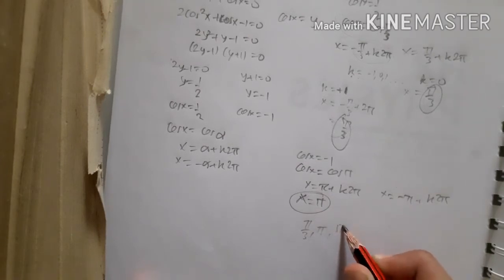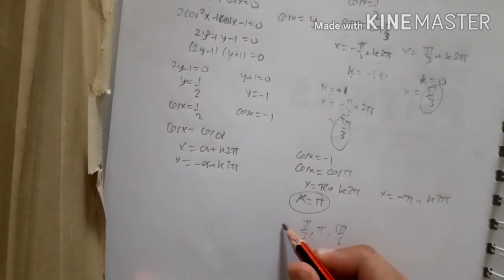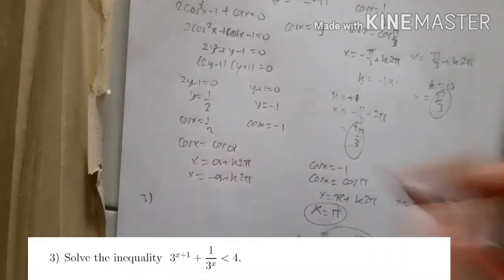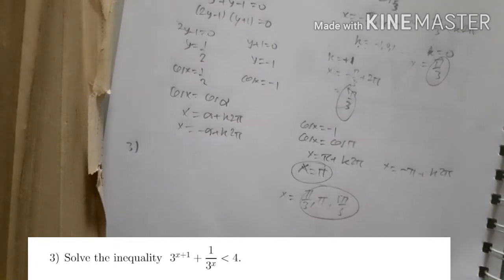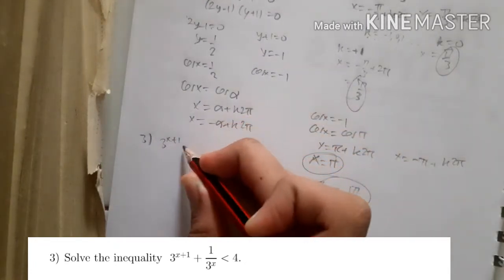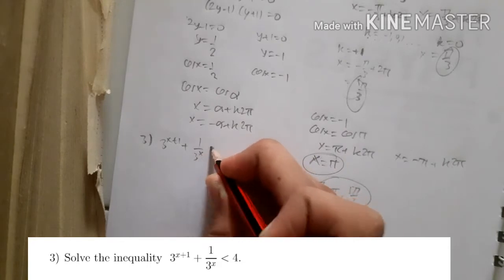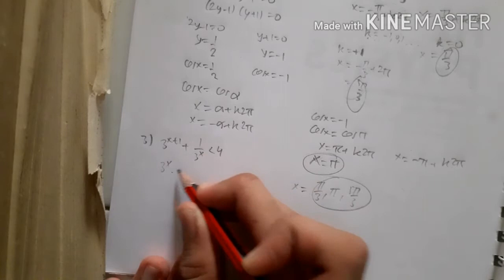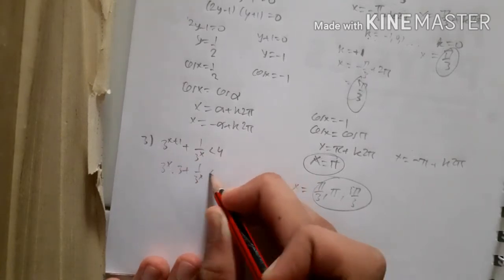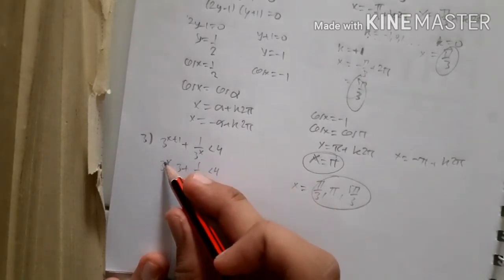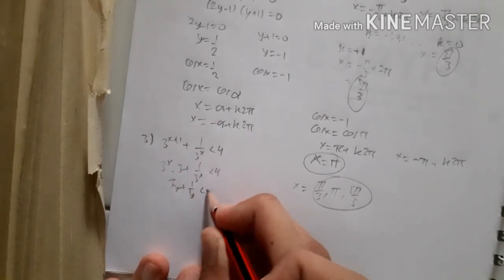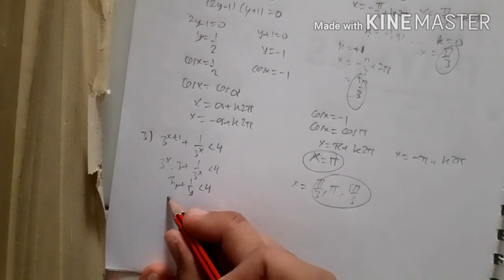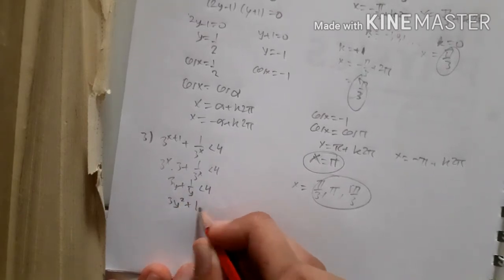Combining all solutions from problem 2: x = π/3, π, and 5π/3. For problem 3, we solve the exponential inequality 3^(3x+1) + 1/3^x < 4. We rearrange and let y = 3^x, so the inequality becomes 3y + 1/y < 4. Multiplying through by y gives 3y² + 1 < 4y.